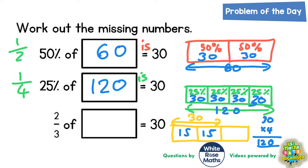And if they are worth 15 each, then the final one must also be worth 15, must be worth 15 as well, which means the total of those three parts must be three lots of 15.